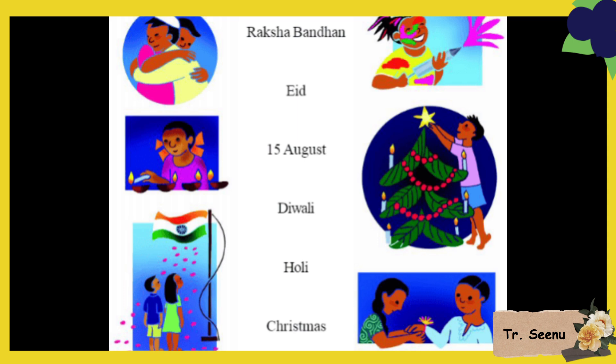Now we have some festivals which you want to match with their names. First: Raksha Bandhan - where a sister ties a Rakhi on her brother's wrist, so we will match it with that last image. Next is Eid - see the first image, which we celebrate at the end of Ramadan.